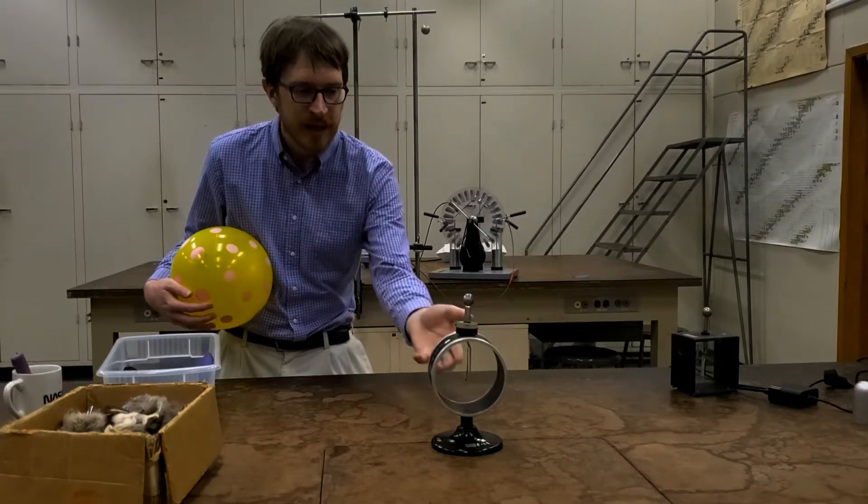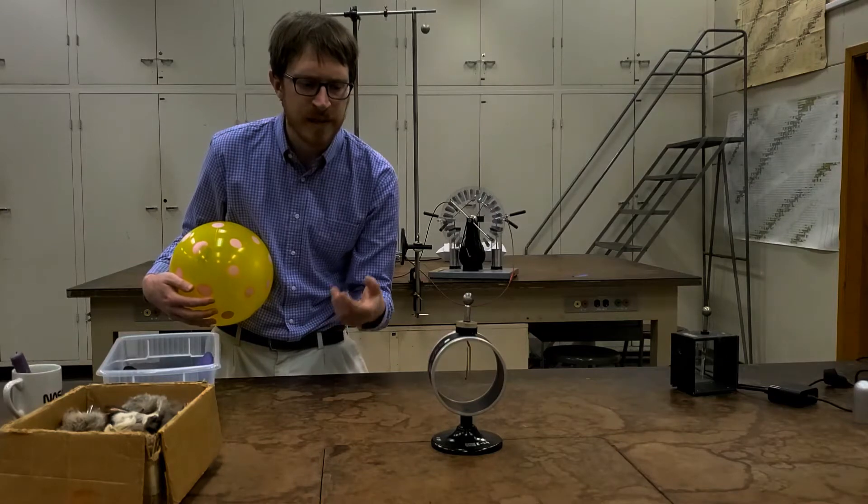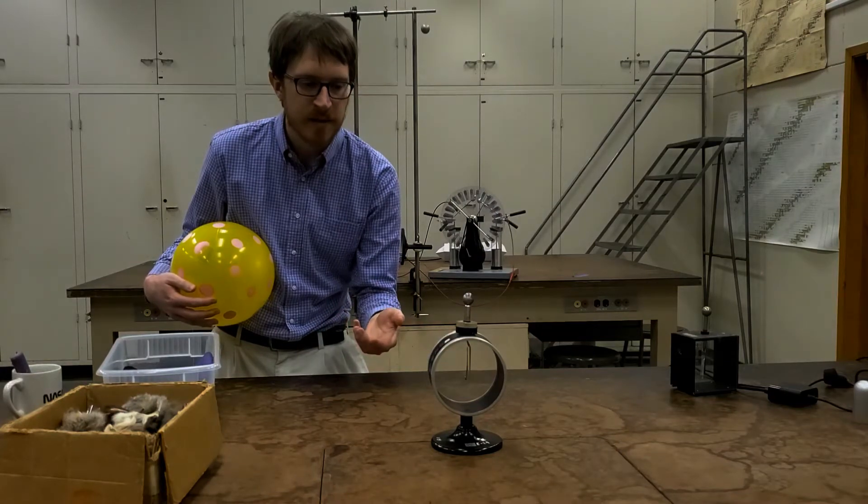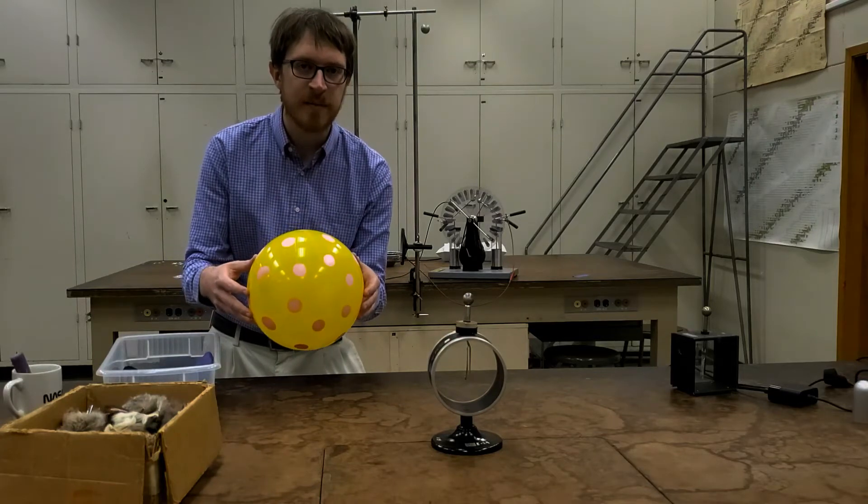Hi everyone. We have here an electroscope whose job is to measure the amount of electric charge, specifically on its leaves. We also have a balloon, which is essentially a piece of plastic.